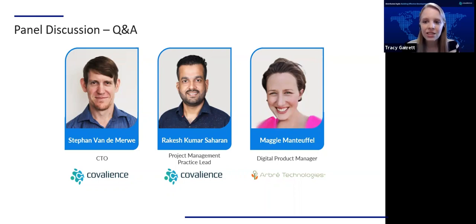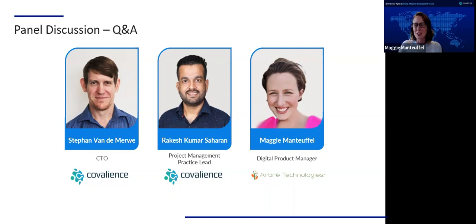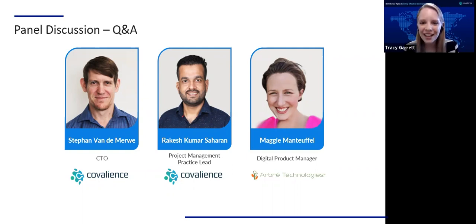My name is Maggie Mann-Typhel. I'm the digital product manager for Arbor Technologies. I've been working with remote teams for the past four years and love thinking about how we might build better relationships and facilitate better information sharing — excited for a great discussion. My name is Rakesh and I'm the practice lead and certified Scrum Master for Cavillions. I've been associated with Cavillions for the last 11 years — nine years as a developer and five years as a Scrum Master. Thank you.